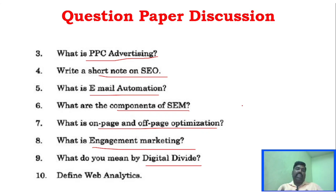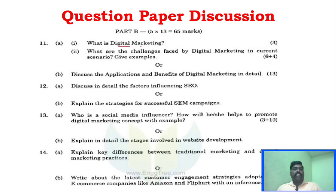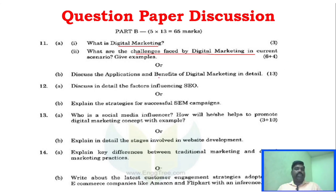If you look at the April May 2024 question paper there are 20 questions — about 4 to 5 questions per unit. Key questions include: what is digital marketing, challenges faced in digital marketing, applications and benefits of digital marketing, factors influencing SEO, successful SEM campaign strategies, social media influencers, and stages involved in website development.